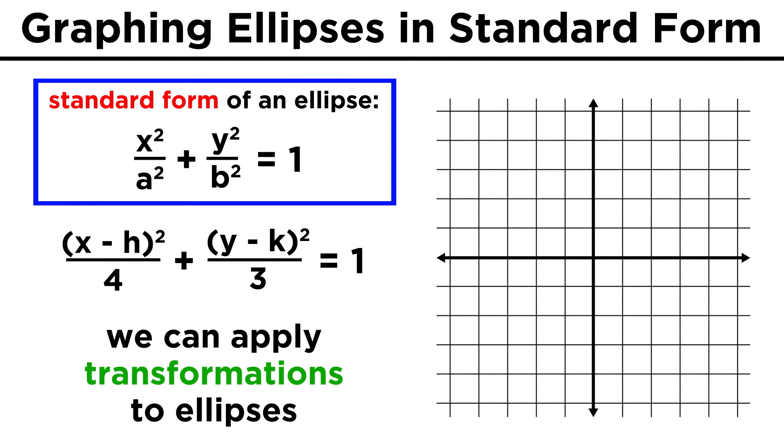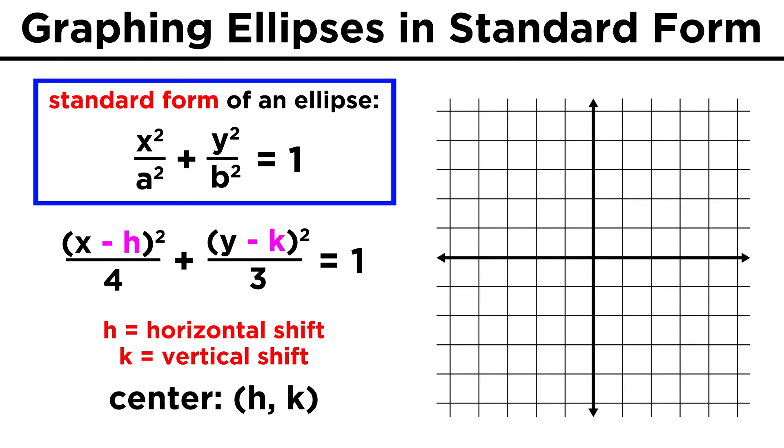Ellipses can be transformed by some of the ways we already know, except in this case we can write X minus H quantity squared, and Y minus K quantity squared, rather than X squared and Y squared, and these H and K values will be the horizontal and vertical shifts, respectively.